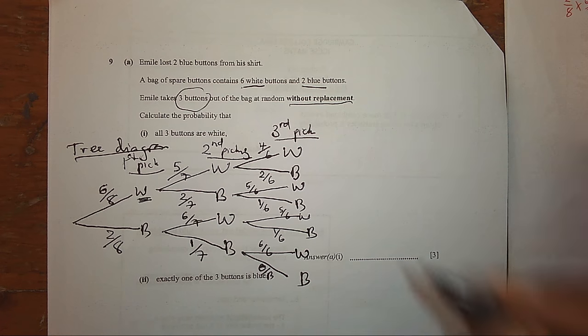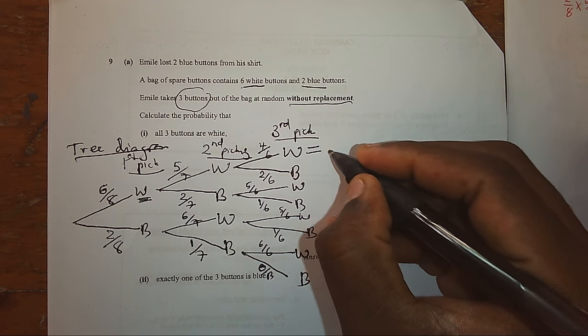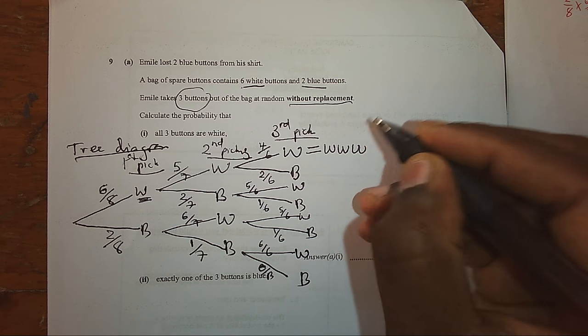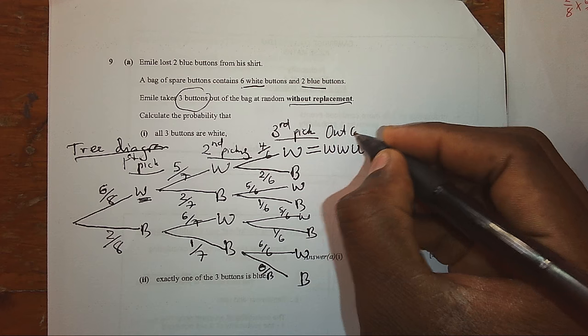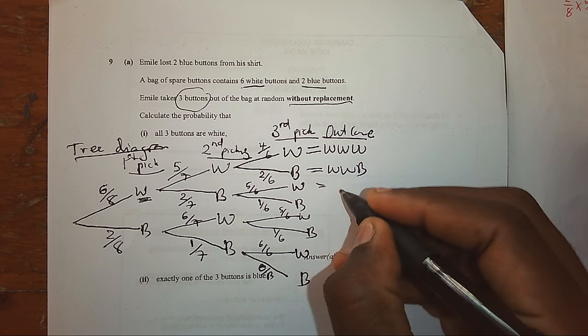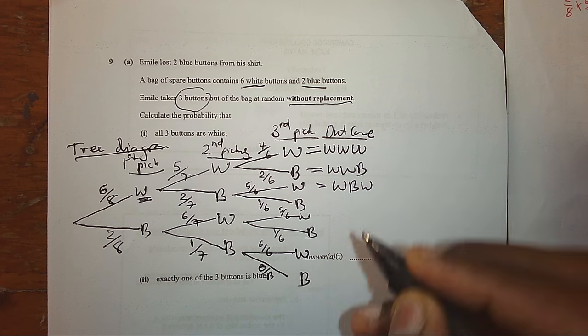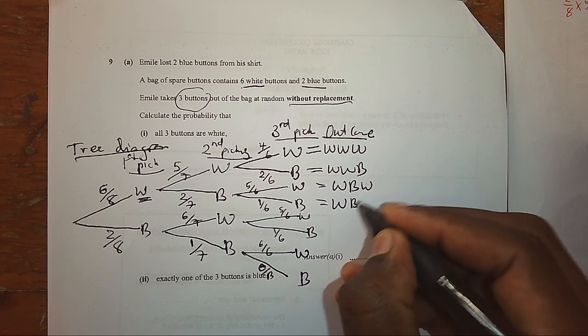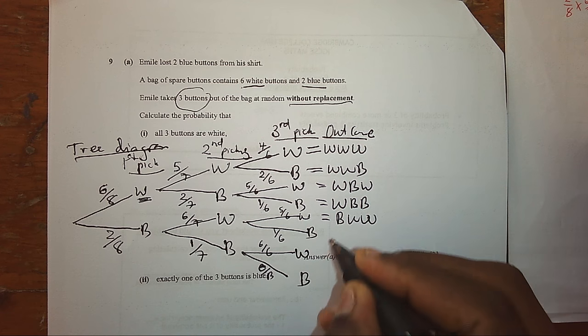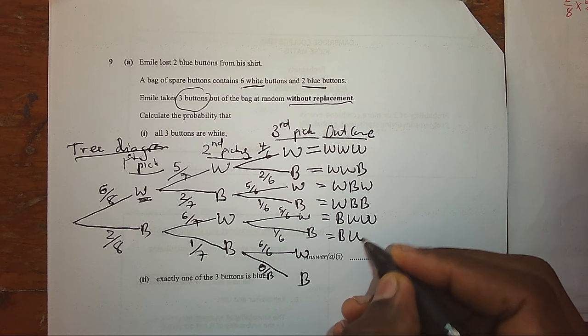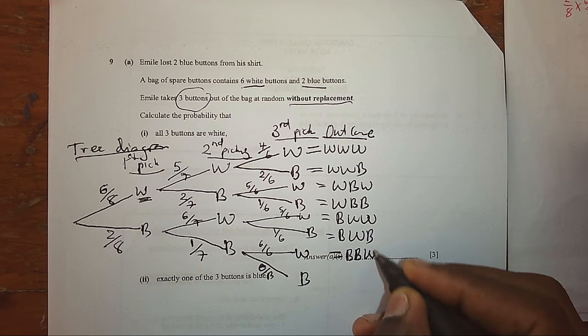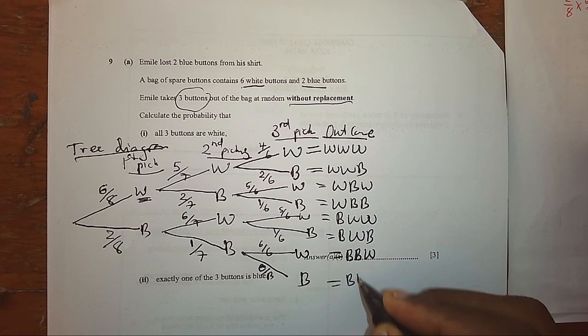Now, what are the possible outcomes of picking? We can pick white, white, white. That is our outcome. Or, we could pick white, white and blue. White, blue, white. White, blue, blue. Blue, white, white. Blue, white, blue. Blue, blue, white. And finally, blue, blue, blue.